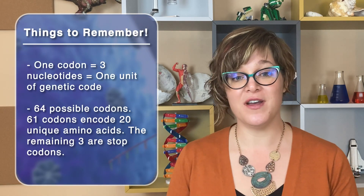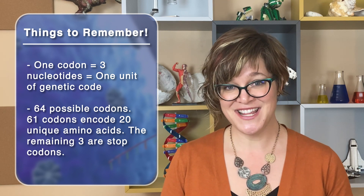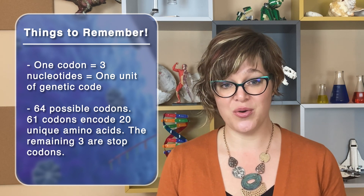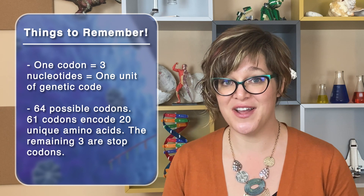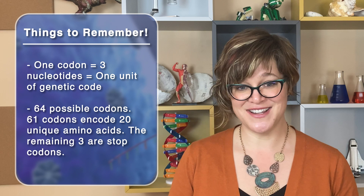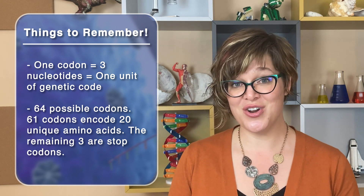Now, what about those remaining three codons that don't encode amino acids? They're called stop codons and they tell the protein to stop translating. So let's take a step back. A codon is made up of a sequence of three nitrogenous bases — these form a unit of the DNA or RNA genetic code. There are 64 possible codons. 61 of those encode 20 unique amino acids, and the rest tell protein synthesis when to start or stop.